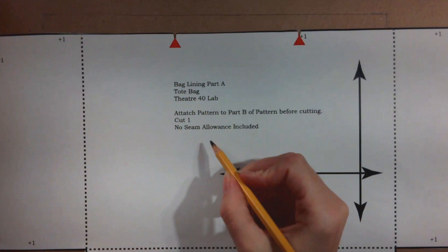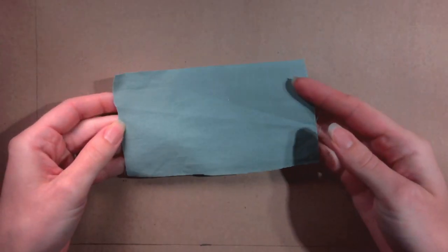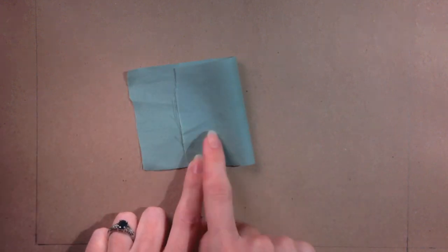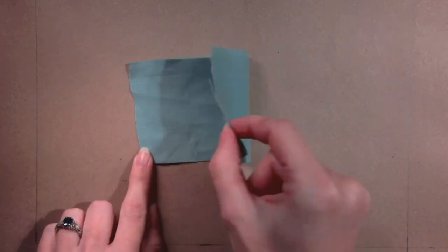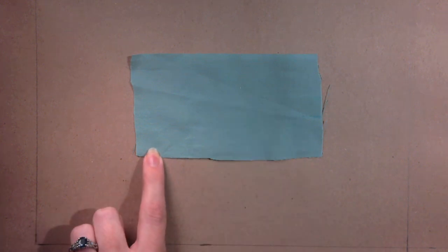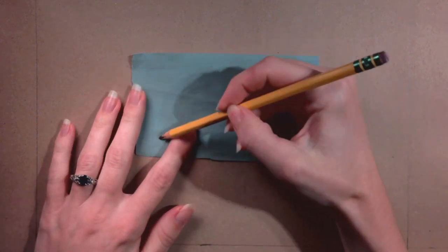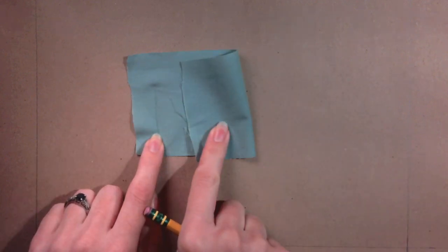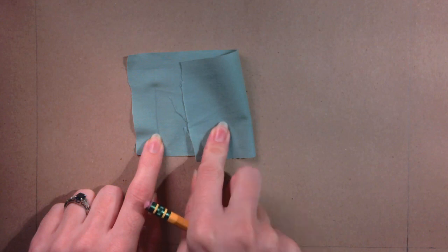Before you begin to cut there are some characteristics of fabric to be aware of. It is important to locate the right and wrong side of the fabric. Some fabric is the same or very similar on both sides such as the solid green. Choose a side to be the back or wrong side. When the stitch lines are added this will designate this as the wrong side and the clean side or side with no writing the right side of the fabric. The right side of the fabric will be visible when the bag is finished.